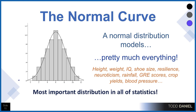Height, weight, IQ, shoe size, levels of resilience or neuroticism, rainfall, GRE scores, crop yields, blood pressure — this is what makes the normal distribution the most important distribution in statistics. We can use it for so many different things.